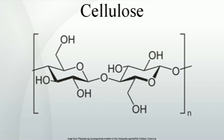Cellulose is an organic compound with the formula (C₆H₁₀O₅)n, a polysaccharide consisting of a linear chain of several hundred to over 10,000 β-linked D-glucose units. Cellulose is an important structural component of the primary cell wall of green plants, many forms of algae and oomycetes. Some species of bacteria secrete it to form biofilms.